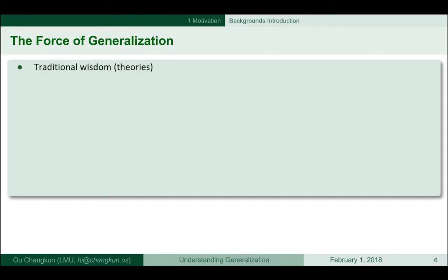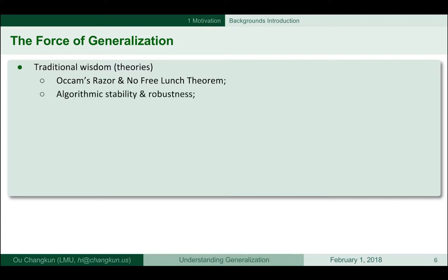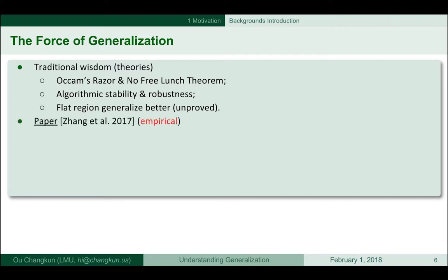The traditional theories include the no-free-lunch theorem, algorithmic stability and robustness, and flat minima — empirical results suggesting flat regions generalize better. The paper from ICLR 2017 by Zhang empirically shows three conclusions: deep models generalize well because they remember everything, explicit regularization like L2 normalization is unnecessary, and implicit regularization such as SGD influences generalization.